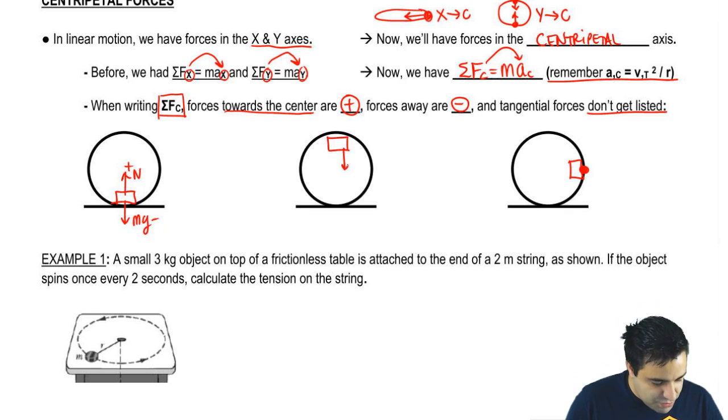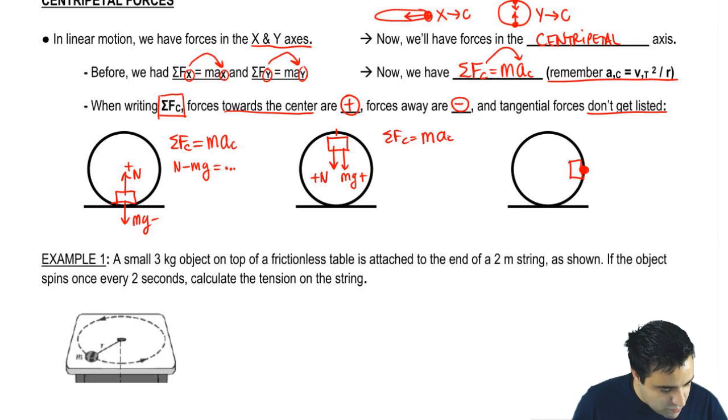Now let's look here. mg obviously is always down, which is positive even though it's down because it's towards the center. And here you're pushing against the track this way, so the track pushes you down like this as well. So they're both positive. So if I were to write F equals ma here, sum of all forces equals ma, I would write sum of all forces centripetal because I'm going around a circle, equals ma_c, and the forces here would be n minus mg. And the second one, sum of all forces centripetal equals ma_c, would be n plus mg because they're both positive.